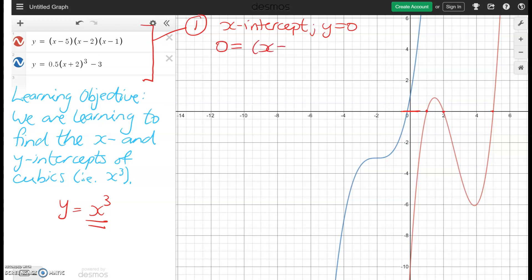So zero is equal to x minus five, x minus two, and x minus one. And just like we do for quadratics, each bracket in the factorized version will give us an answer.